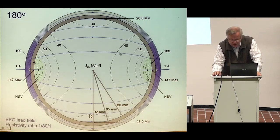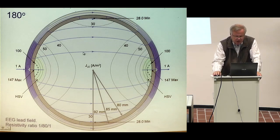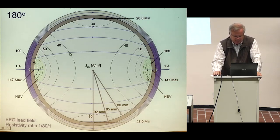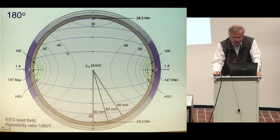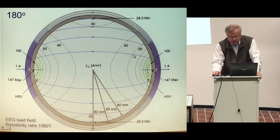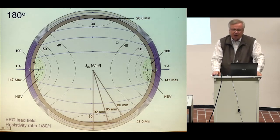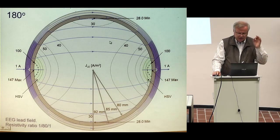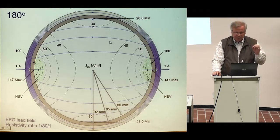Rush and Driscoll calculated these flow lines. In addition, we calculated surfaces on which the current density is constant — the isosensitivity surfaces. Here the current density values are 40, 50, 60, 70, 80, 90, and 100 amperes per square meter. This reciprocal current is exactly the same as the measurement sensitivity of this lead in this volume conductor — that comes from the principle of reciprocity.